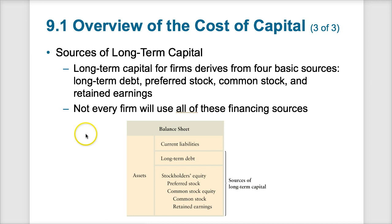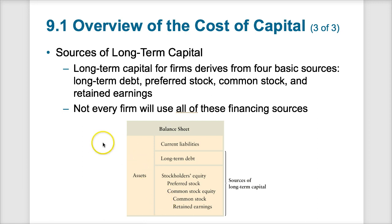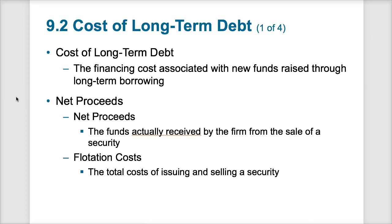Sources of long-term capital include long-term debt, preferred stock, common stock, and retained earnings — these are areas where a company can generate sources of capital on a long-term basis. Not all companies will use all these categories at once, but some combination. For very profitable companies that generate a lot of earnings, retained earnings alone might fund their projects without needing to call on capital markets to issue bonds or new stock.